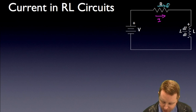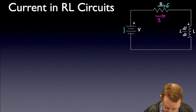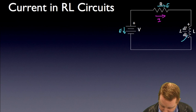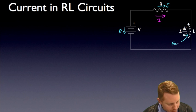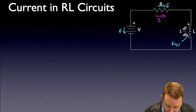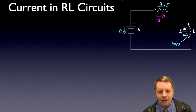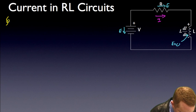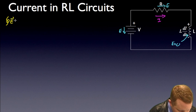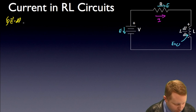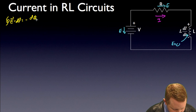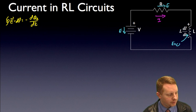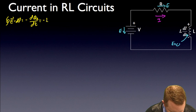In the resistor our electric field is going to point that way. In our power supply it's going to point from positive to negative that way. In our inductor our electric field is going to be zero. So now we can write Faraday's law: the integral over the closed loop of E dot dl is going to be equal to minus dΦ_B/dt, the negative rate of change of our magnetic flux, which in this case is negative L dI/dt.